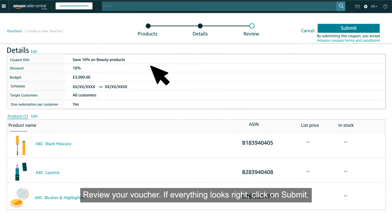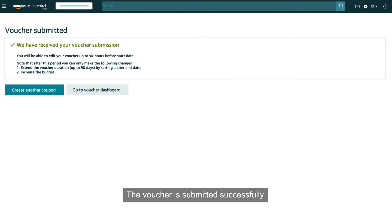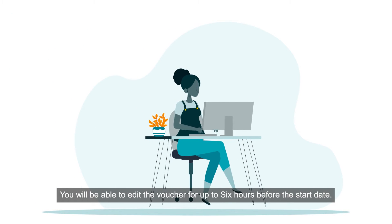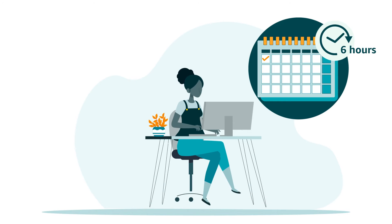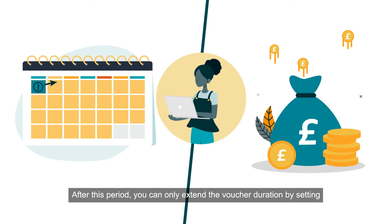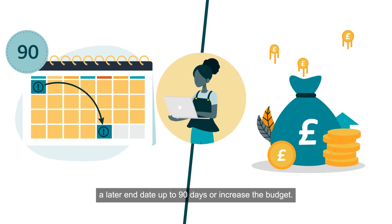Review your voucher, and if everything looks right, click on Submit. The voucher is submitted successfully. You will be able to edit the voucher for up to six hours before the start date. After this period, you can only extend the voucher duration by setting a later end date up to 90 days, or increase the budget.